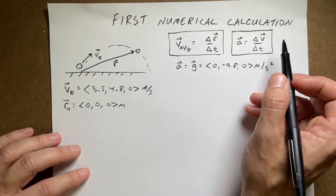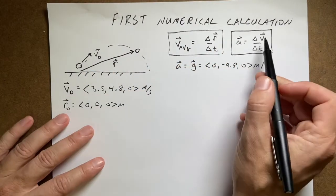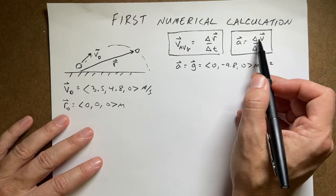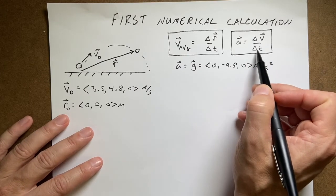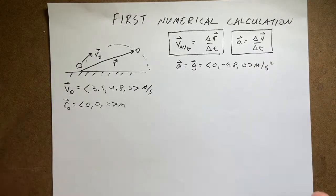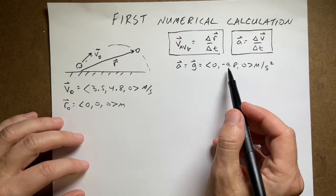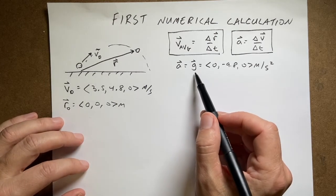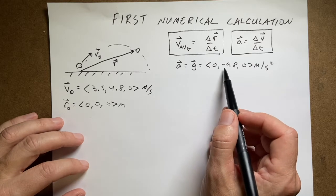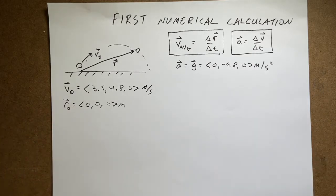Acceleration could be like the derivative of velocity with respect to time — it's a vector. I can take a vector change and divide by a scalar change in time and get another vector. In this case I have a constant acceleration of negative 9.8 in the y direction: that's my gravitational acceleration, (0, -9.8, 0) meters per second squared. So the ball is not going to move at constant velocity — it's going to change velocity and change position.